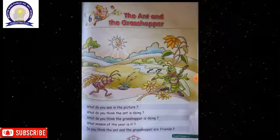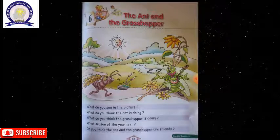What do you see in the picture? Generally, there are two insects. One is the ant and the other is the grasshopper.